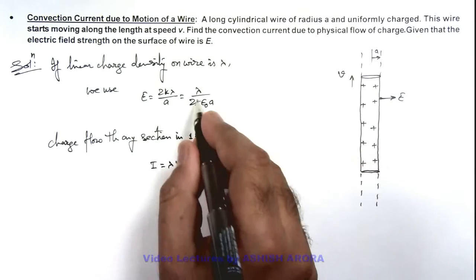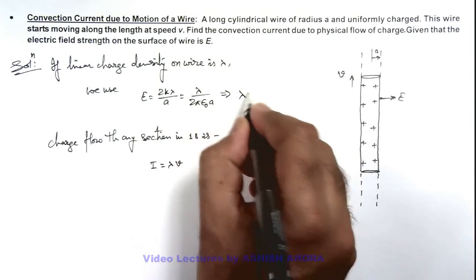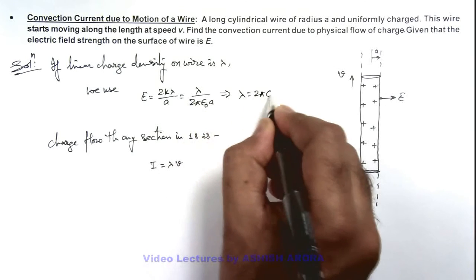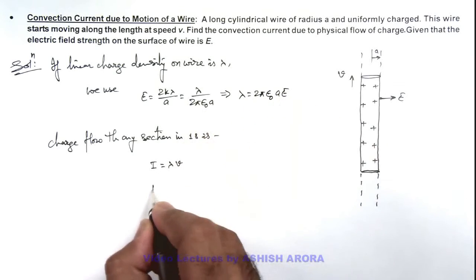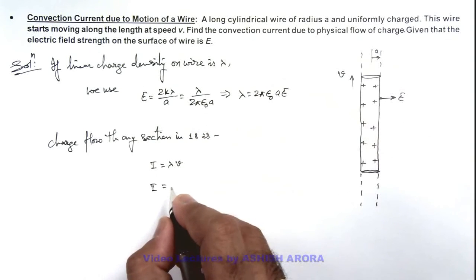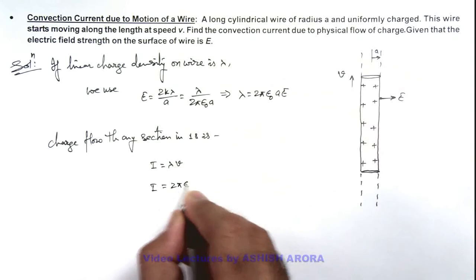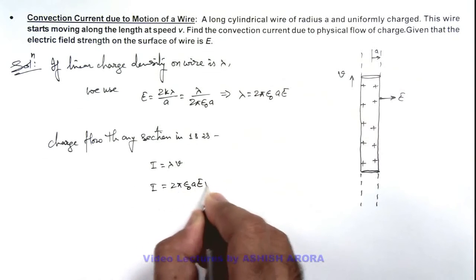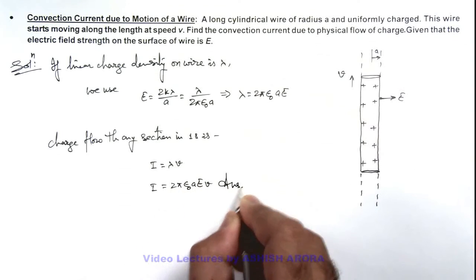If we substitute the value of λ from here, the value of λ we are getting is 2πε₀aE. If we put it here, the value of current due to the flow of charges, which we also call convection current, is given as 2πε₀aEv. That will be the answer to this problem.